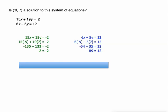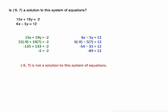So it worked—the point (-9, 7)—in the first equation but not in the second equation. So (-9, 7) is not a solution to the system of equations.